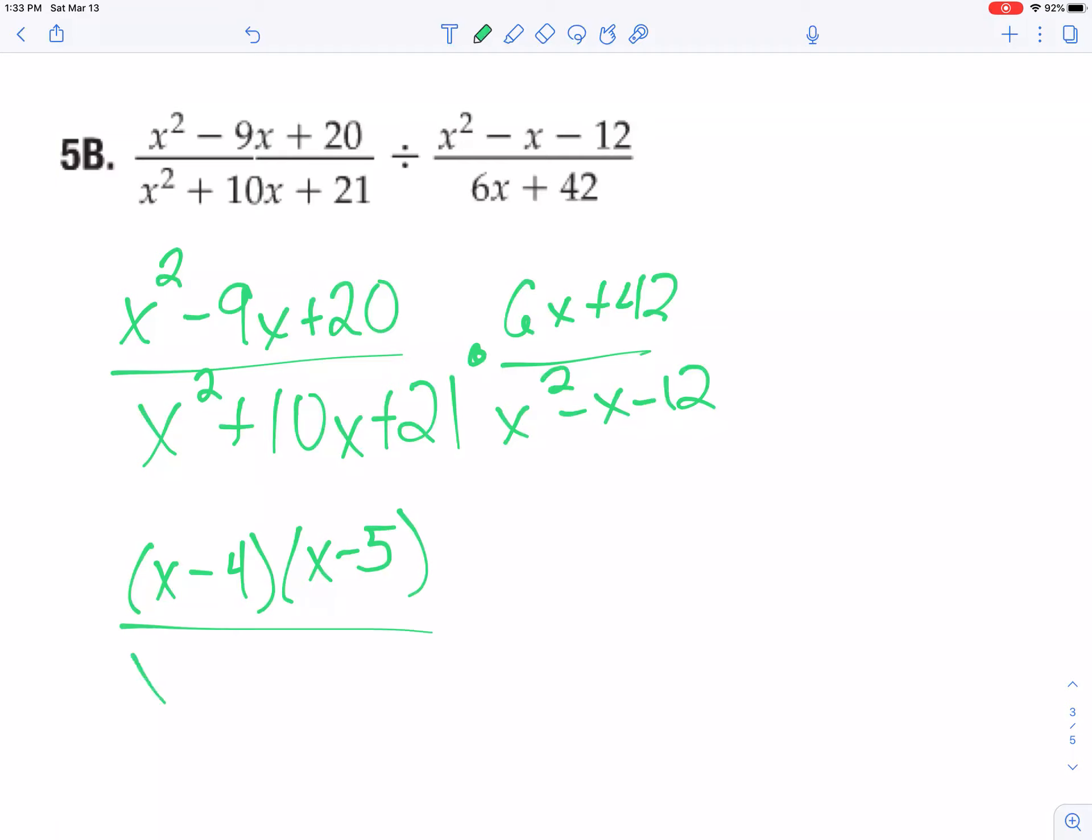The bottom one, how about 3 and 7? And let's see, it looks like I can take a 6 out of the top, so I'm going to make that 6 parentheses x plus 7 and as far as the bottom goes, that looks like a negative 4 and a positive 3.